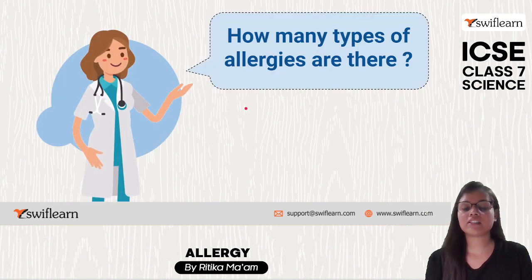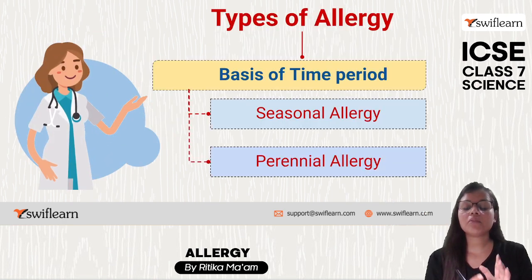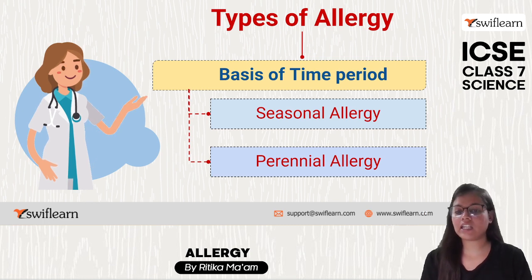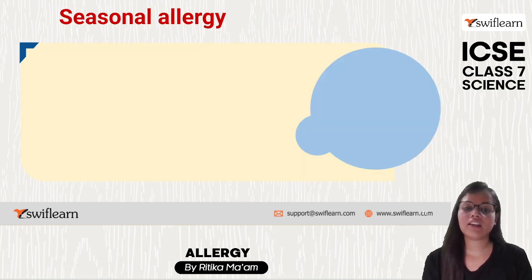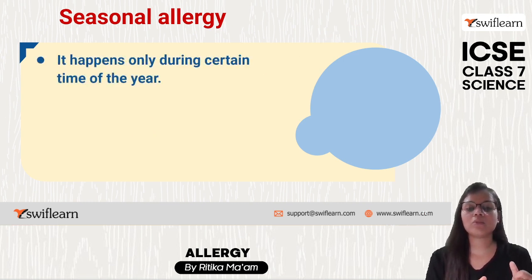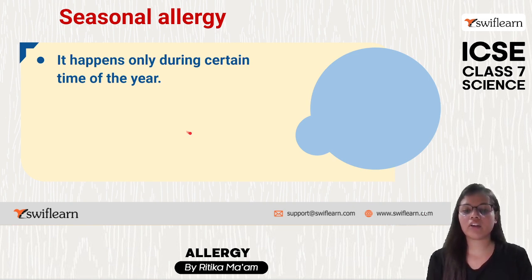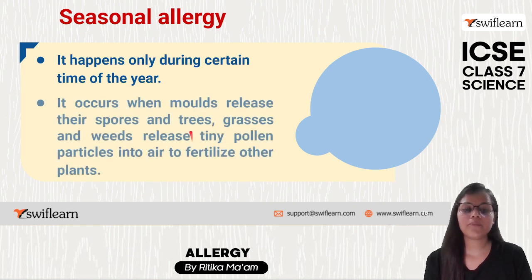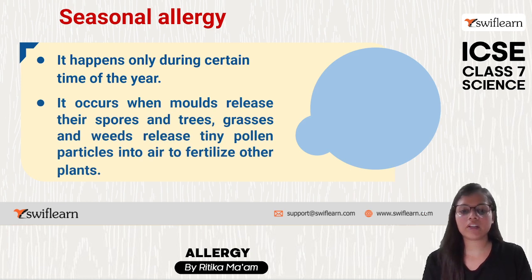Today we are going to see the types of allergy. On the basis of the time period for which the allergy lasts, it is divided into two categories: seasonal allergy and perennial allergy. Seasonal allergy happens only during a certain time of year — it is not lifelong or year-round.